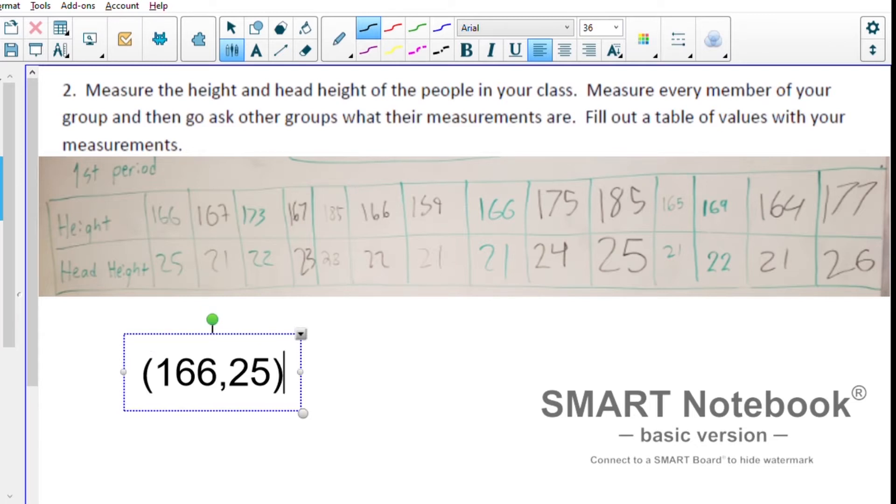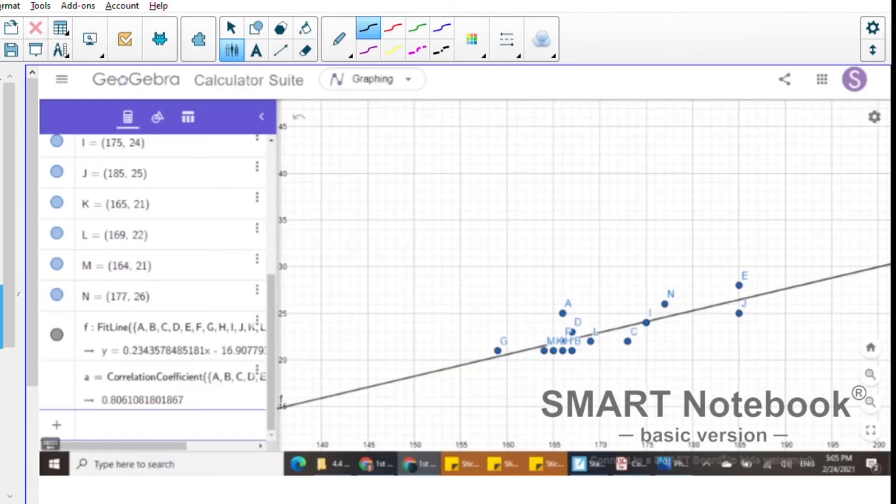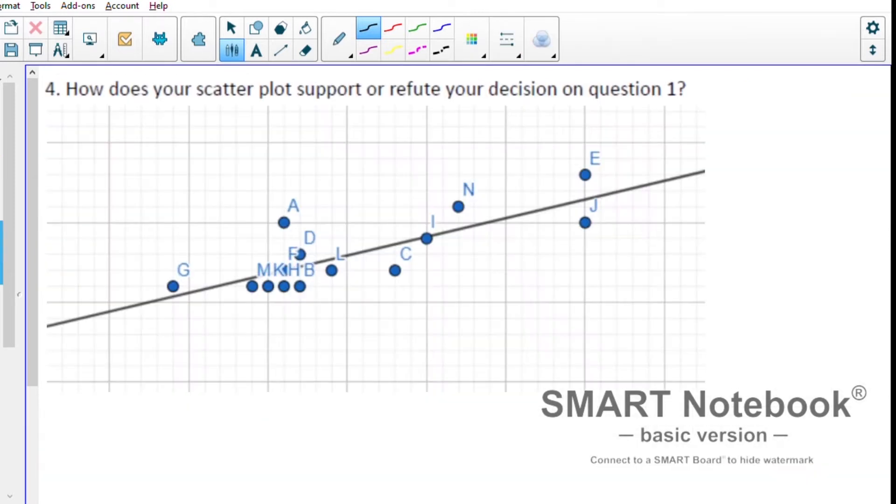When we get done with all of these data points, our graph looks like this. We are to analyze whether or not this agrees with what we wrote in question number one. Does it support your logic or does it refute what you said? We said that there was a correlation, and it looks to me like it indeed is true that we're going up and to the right.